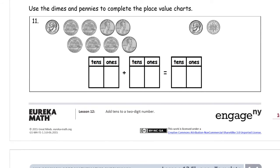Use the dimes and pennies to complete the place value charts. So right here, we've got two parts that we're adding together. And we're looking at tens and ones for this first part here. There's one dime. And then we have 1, 2, 3, 4, 5, 6, 7, 8 pennies. Pennies are ones, so that's 8. Dimes are 10 cents, so that's 1 ten. Not 10 tens, because the dime is 10, but it's 1 ten. It's the same as one group of 10 pennies.